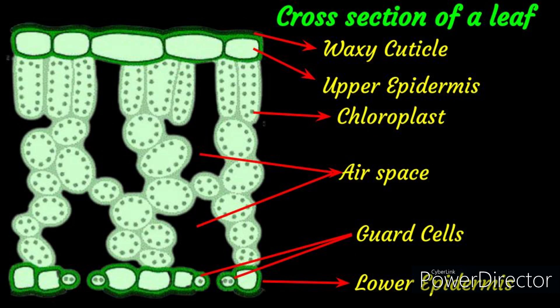Now let us learn how the materials required for photosynthesis are received. Let us see the cross-section of the leaf under the microscope. While seeing the cross-section of the leaf under the microscope, we can see some cells containing green dots. These green dots are cell organelles called chloroplasts. The chloroplasts contain chlorophyll, and chlorophyll helps to trap the sunlight.